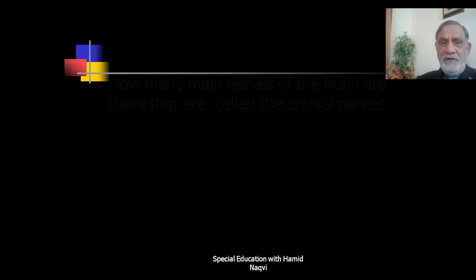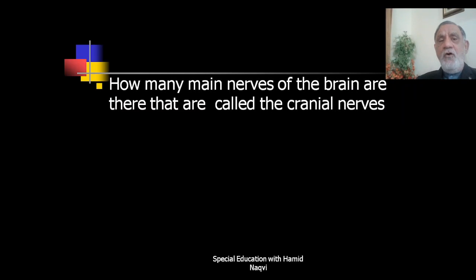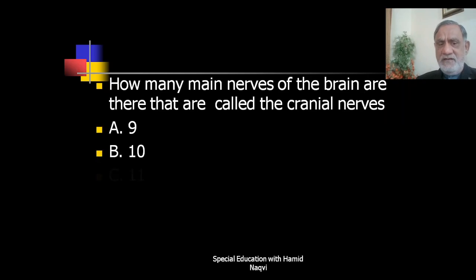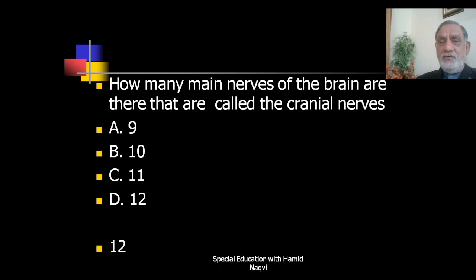Next question: How many main nerves of the brain are there, called the cranial nerves — 9, 10, 11, or 12? The correct answer is 12 — there are 12 cranial nerves.